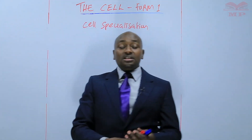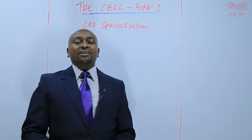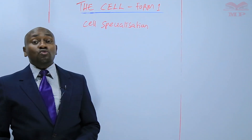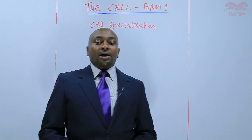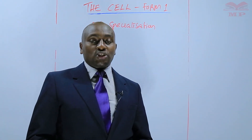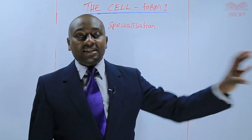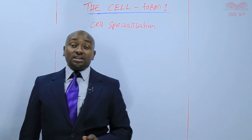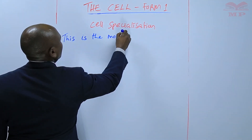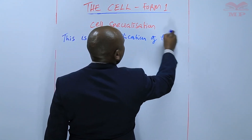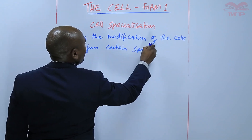We need first of all to define what cell specialization is. Just to give an example, we have different people who have specialized in different fields — some are doctors, others are lawyers, and so on and so forth. Similarly, cells also get specialized. They become modified in a certain way so that they can perform a certain specific function. Cell specialization is the modification of cells to perform certain specific functions.